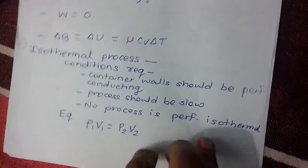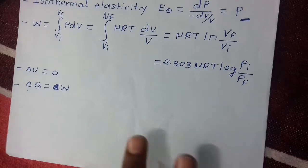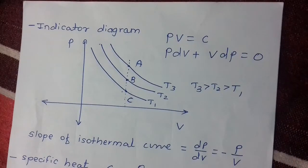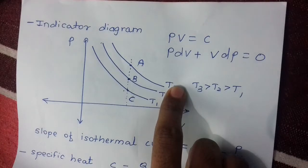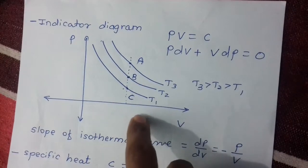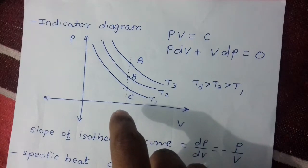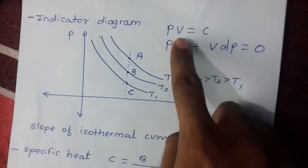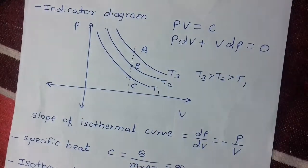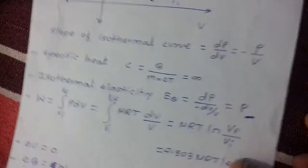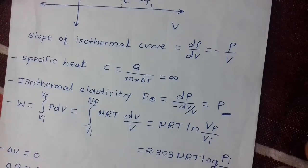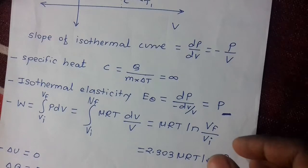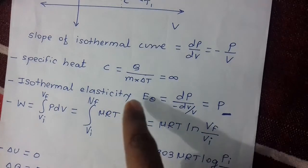For isothermal process, the applicable equation is P₁V₁ = P₂V₂. The indicator diagram shows isothermal curves where curve A has higher temperature than curve B, and curve B has higher temperature than curve C. Differentiating PV = constant gives PdV + VdP = 0, so dP/dV = −P/V, which is the slope of the isothermal curve.